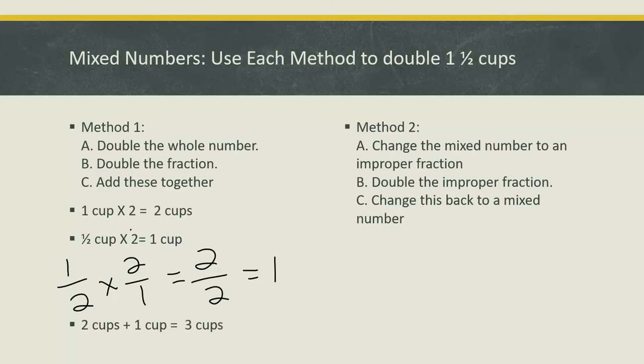Let's try the second method. First, we're going to start by changing one and a half cups into an improper fraction. In order to change into an improper fraction, start by thinking about how many halves are in one cup. I'm taking the whole number and making it into a fraction. So one cup is equal to two out of two.